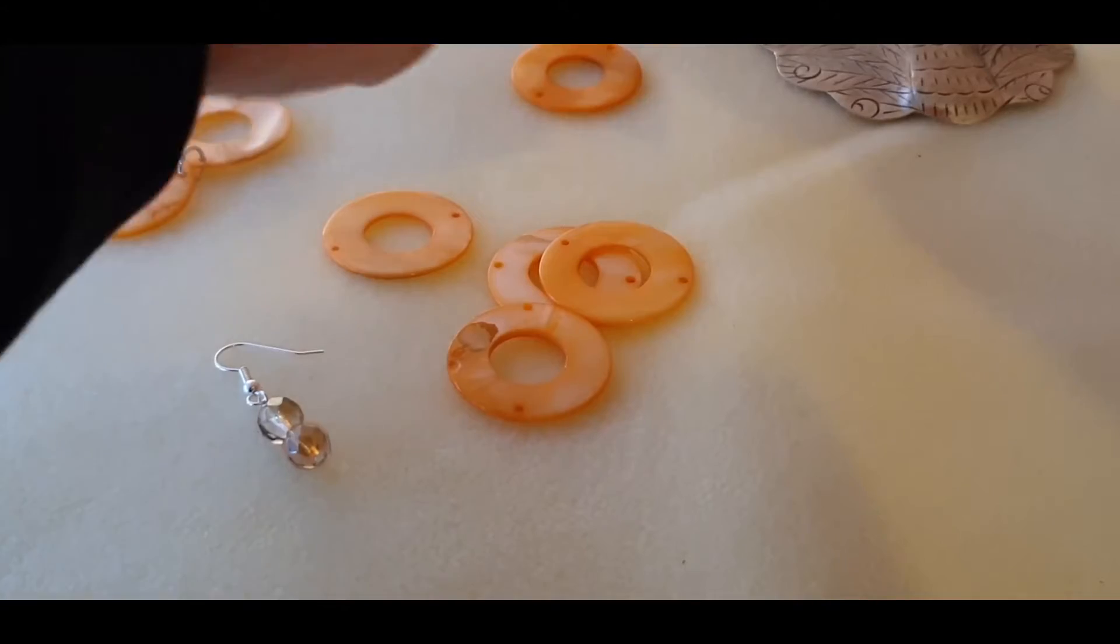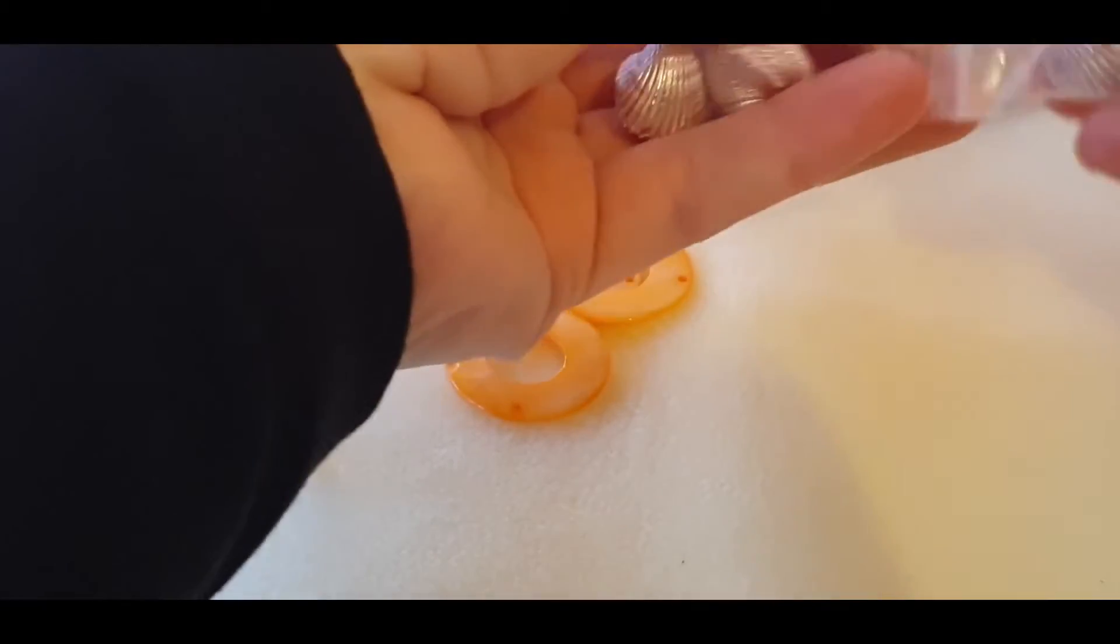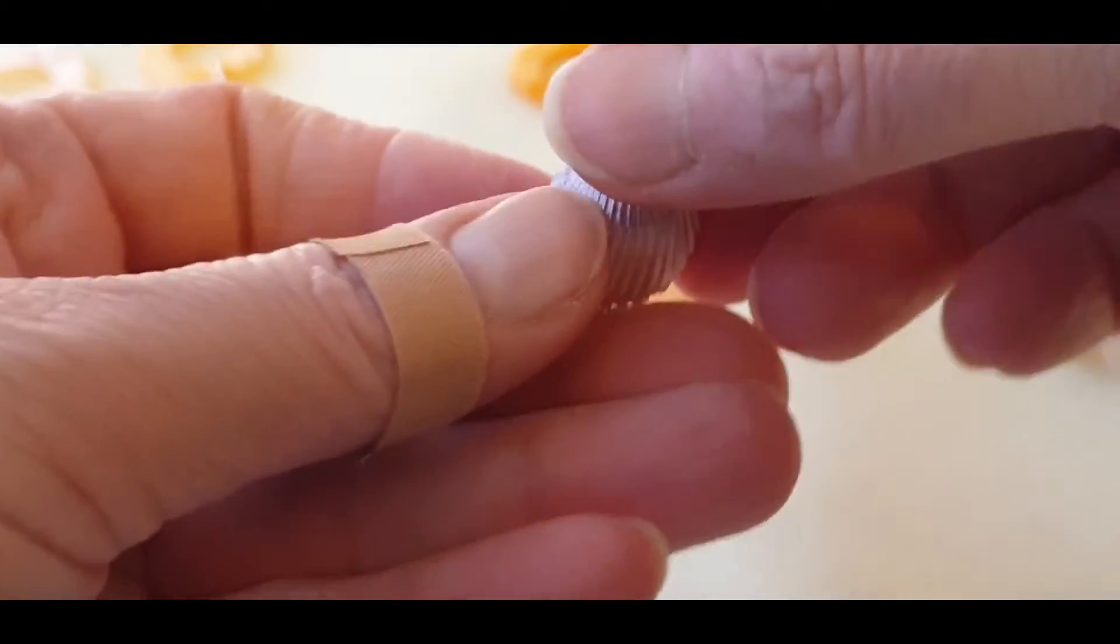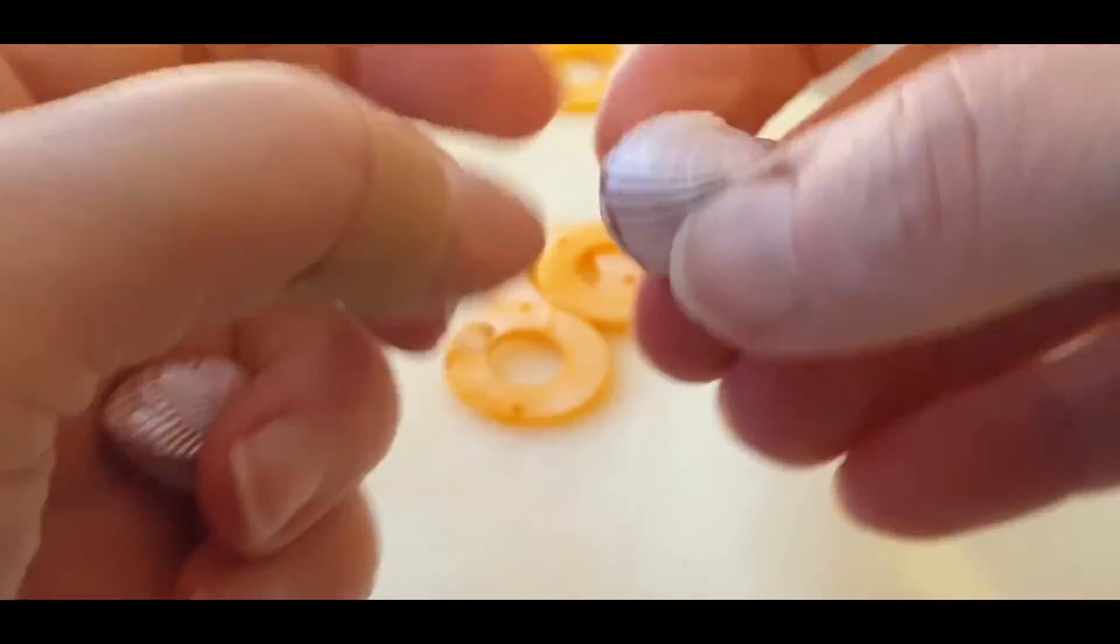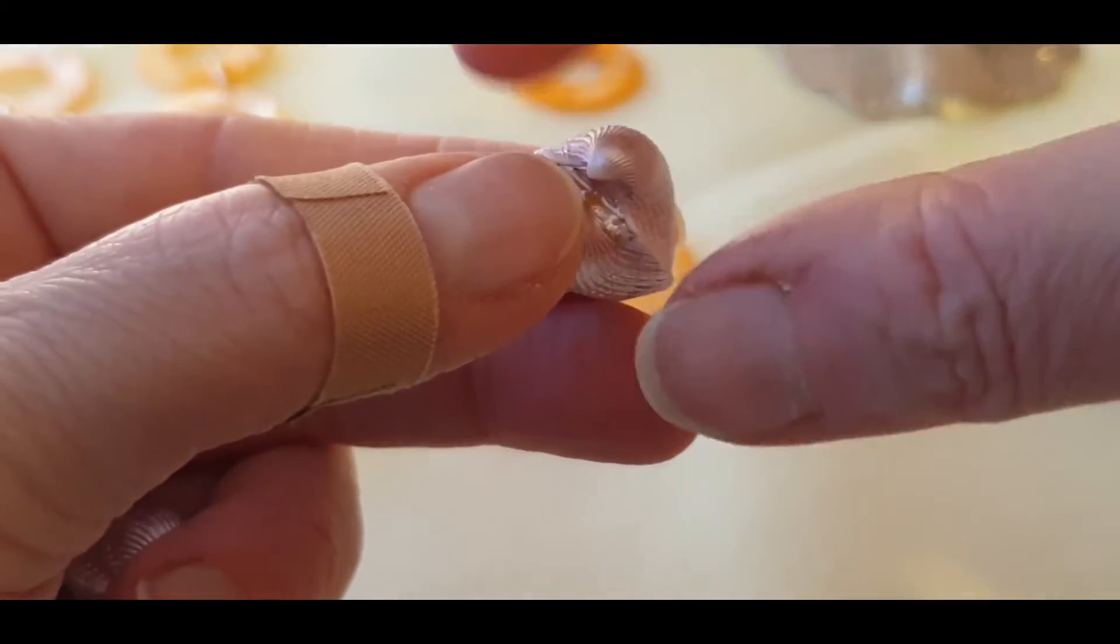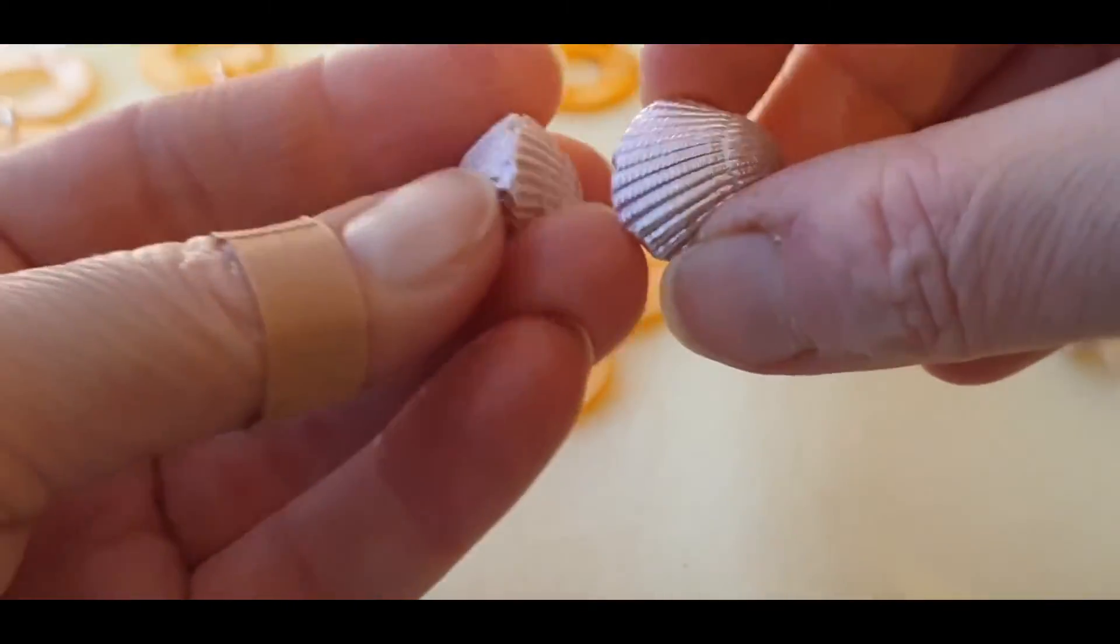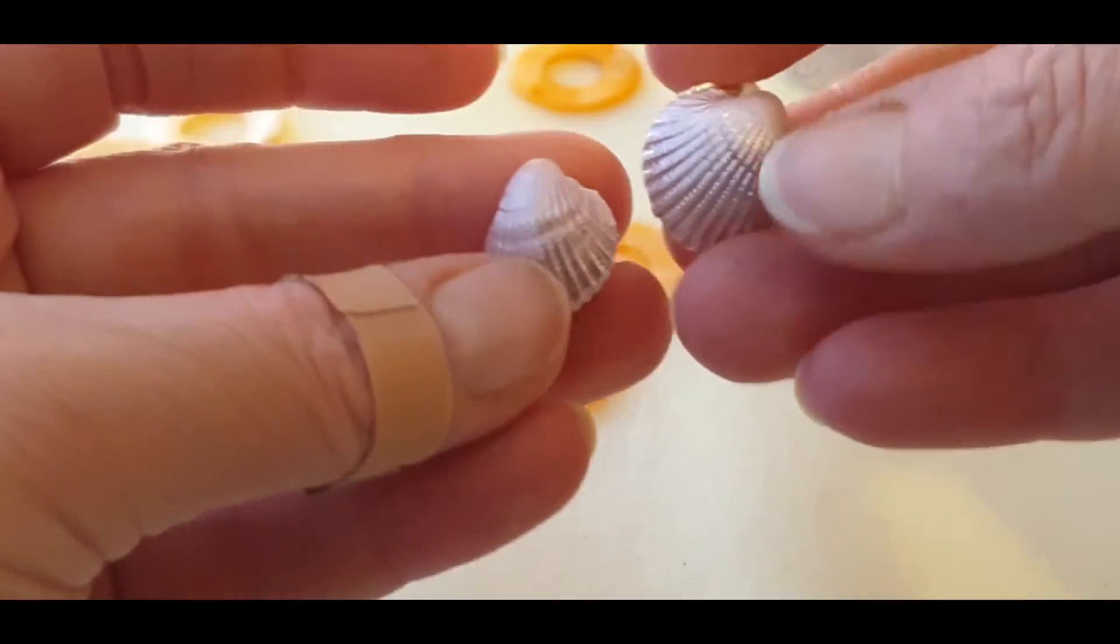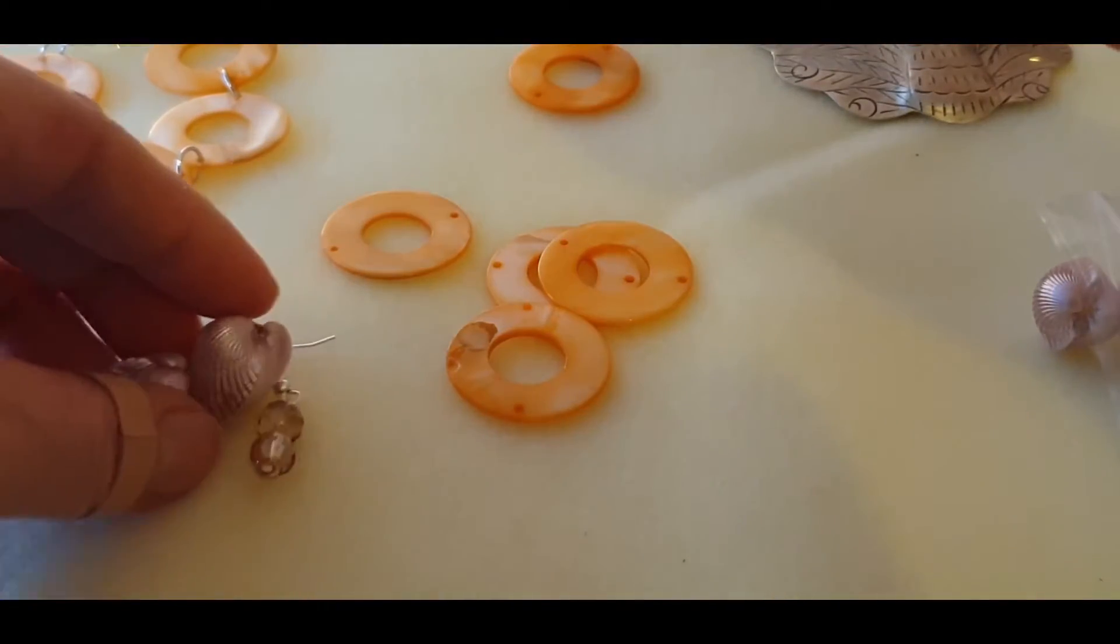And these ones here are, these are shells. They are actually shells that have been sort of spray painted or painted. They've got the holes in them. So you can add the wire or a very large, or sorry, a very long head pin or eye pin. So they're quite nice as well.